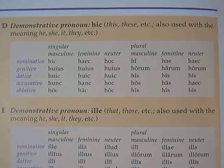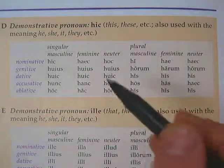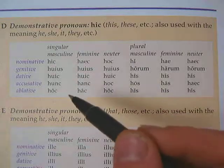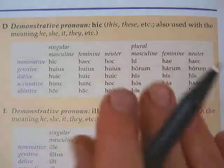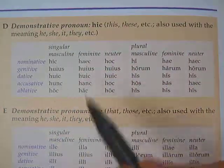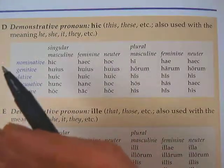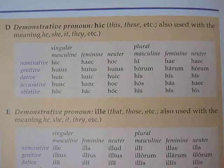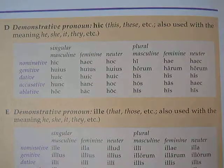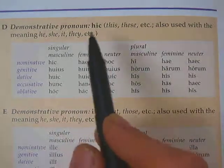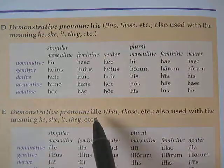Salvete! I promised we'd do more pronouns and here we are. There are several other demonstrative pronouns. Is, ea, id is one of them — that's the neutral, weakest one. These two demonstrative pronouns are a little stronger in meaning: either 'this thing' nearest me or 'that thing' away from me. They are hic for 'this' and ille for 'that.'